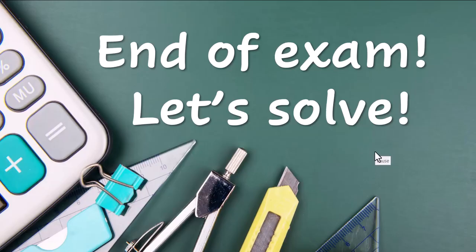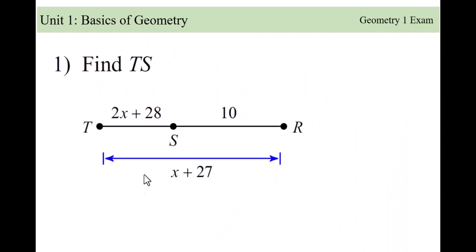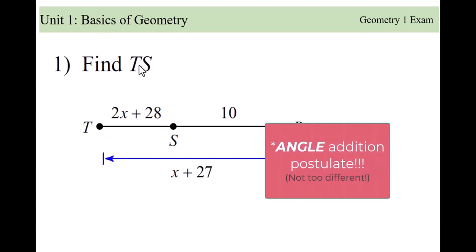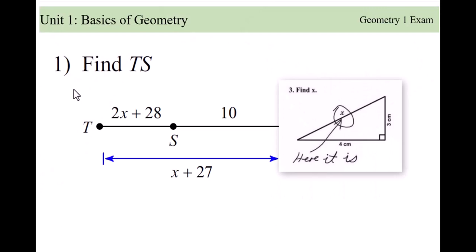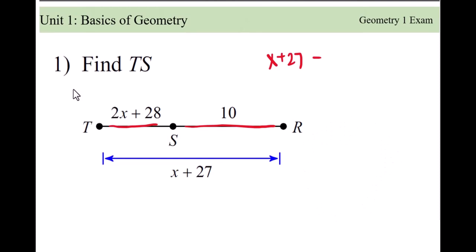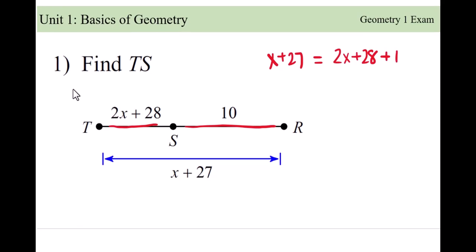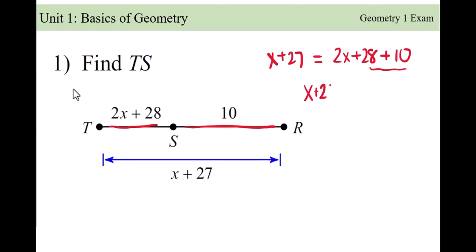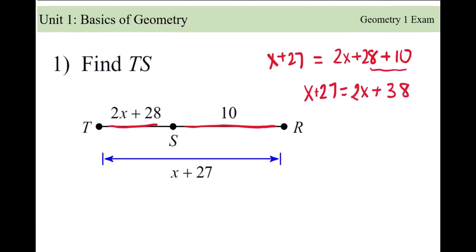Okay, let's get into these problems. For this one we are supposed to find the length of TS. When you see something like this it's the segment measure, which means we have to solve for x. We know that the entire length here is x plus 27, so x plus 27 must equal these two added together: 2x plus 28 plus 10.